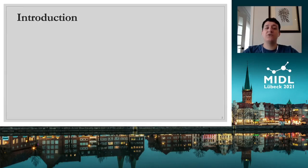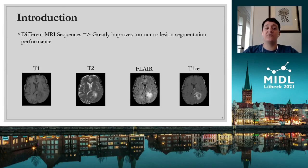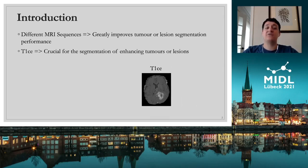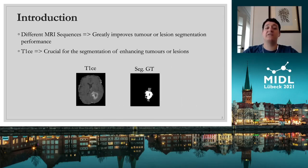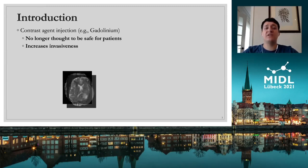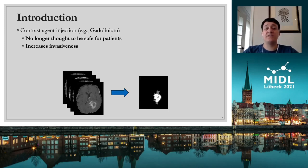It is well known that the inclusion of different MRI sequences greatly improves the performance of automatic tumor or lesion segmentation networks. In particular, the presence of contrast-enhanced T1-weighted MRI has been shown to play a crucial role in the automatic segmentation of enhancing tumors and lesions. However, acquiring T1C images involves injecting a patient with a contrast agent like gadolinium, a process that is invasive and is no longer thought to be safe for patients.